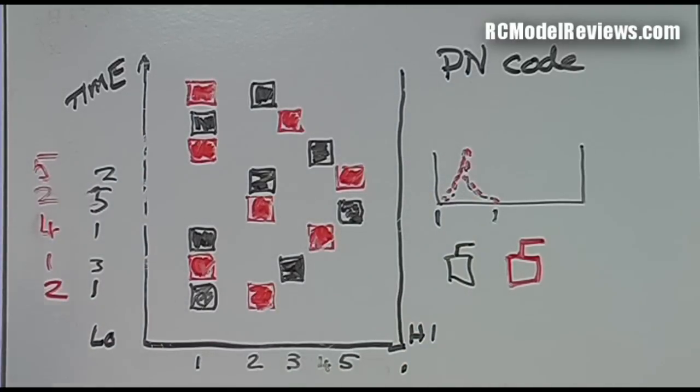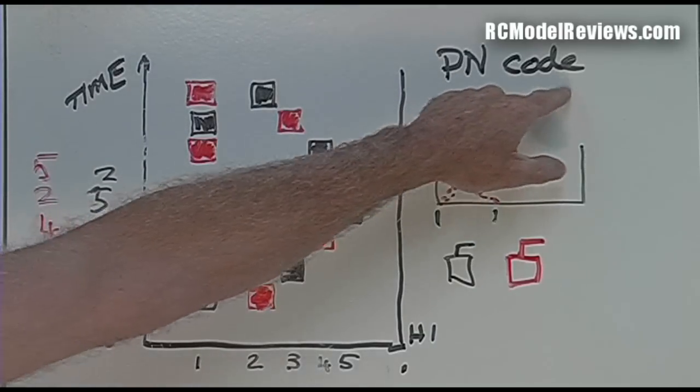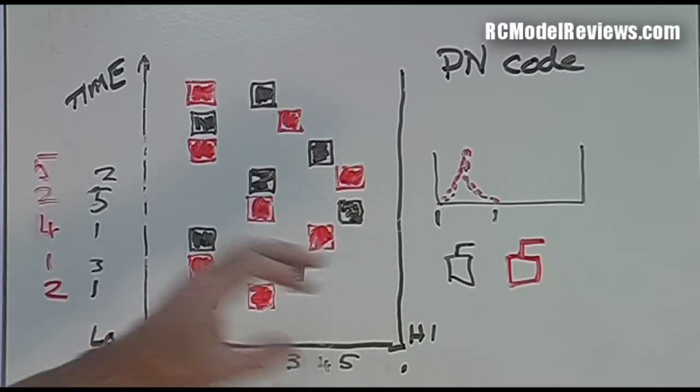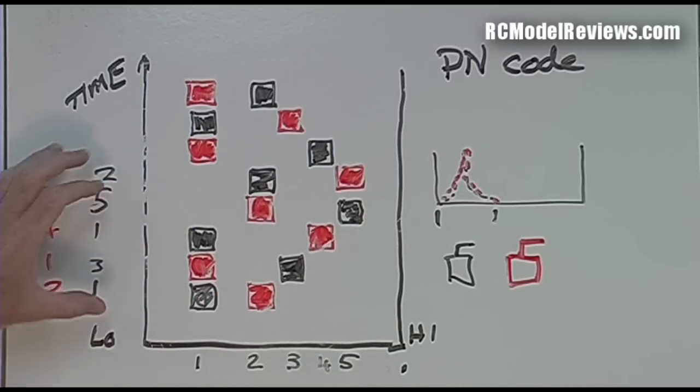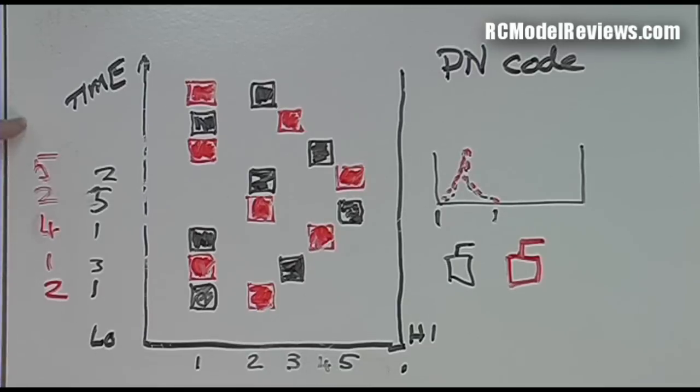Now what about the red transmitter? Well that does something very similar. It has its own set of PN codes, so when it looks at the band all it sees is the red stuff. Pretty clever, isn't it? So these two are using exactly the same part of the band at pretty much the same time.